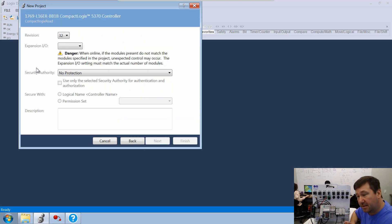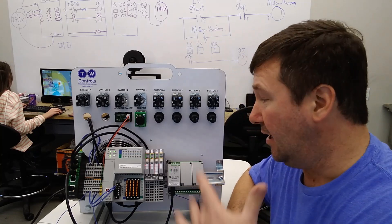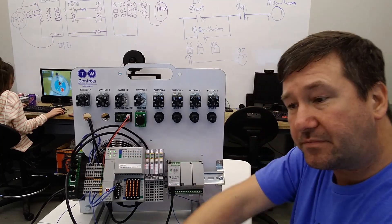If you're using one of our standard trainers, then the expansion IO needs set to zero. We've got some extra modules on here for some other videos we're doing, so we're going to use four here. It's very important that you get that part right, because otherwise your PLC is going to fault the moment you go to run mode.